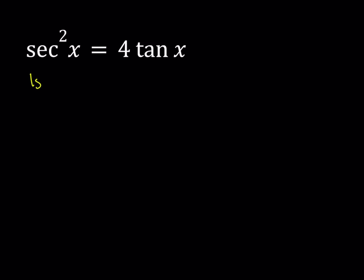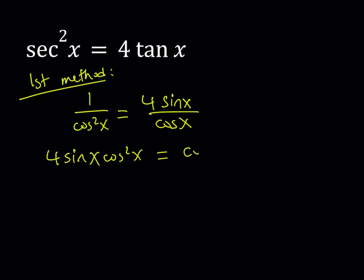Let's start with the first method. Now my first method basically involves writing the secant squared as 1 over cosine squared and writing the tangent as sine over cosine. And then after that, you want to be careful here. You don't want to really cancel anything out. But let's go ahead and cross multiply and we get 4 times sine x cosine squared x equals cosine x.